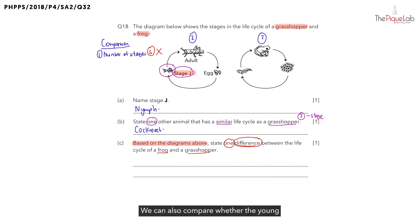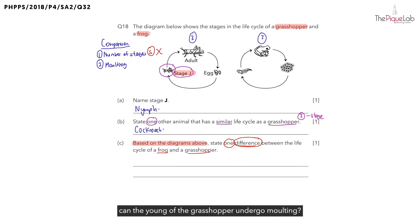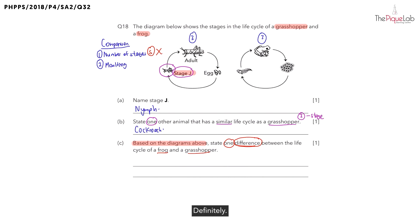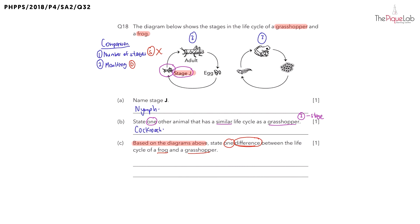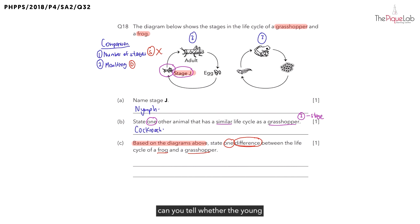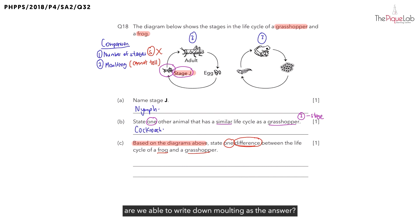The second way we can compare is whether the young is able to undergo molting. The young of the grasshopper can undergo molting, but the young of the frog cannot — so this is a difference. However, those of you who wrote down molting as the difference have gotten this question wrong. Remember the question says 'based on the diagrams above.' From the diagram, you are not able to tell whether the young of the grasshopper can undergo molting. Since we cannot tell from the diagram, we cannot write down molting as the answer. So molting is out.